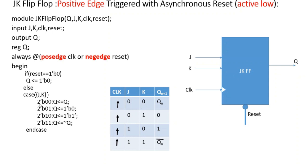In the second row, when J is 0 and K is 1, Q should be equal to 0. We are getting it from the second statement where we put 2'b01 because J is 0 and K is 1. Third row: when J is 1 and K is 0, Q should be equal to 1, and we are getting it from the third statement.